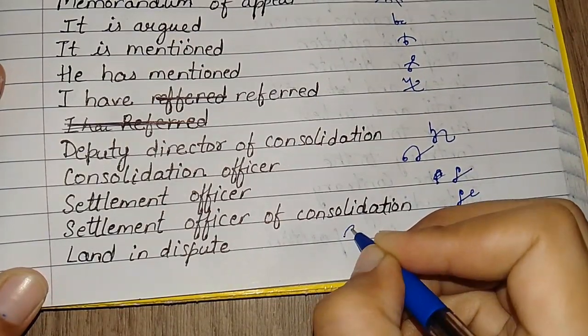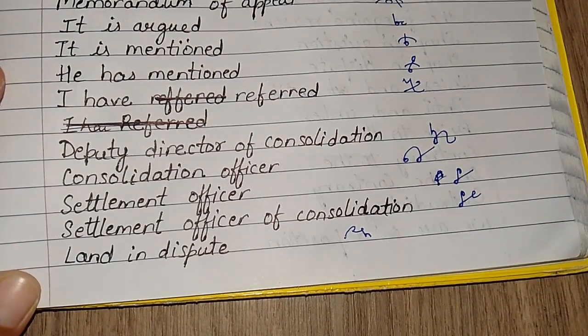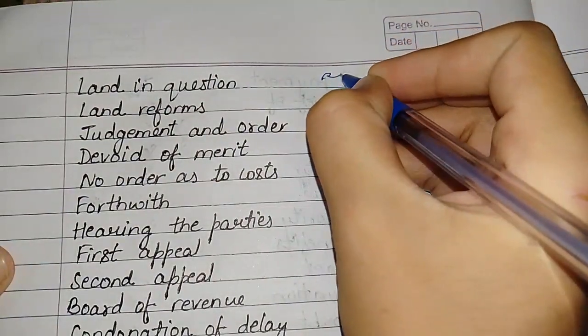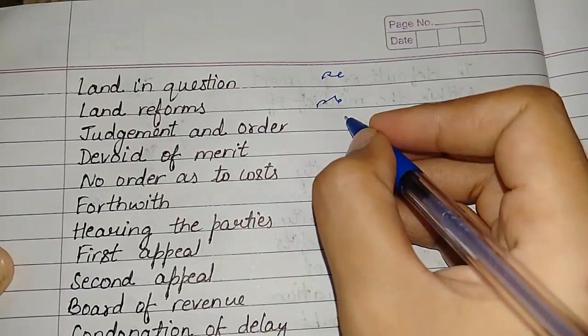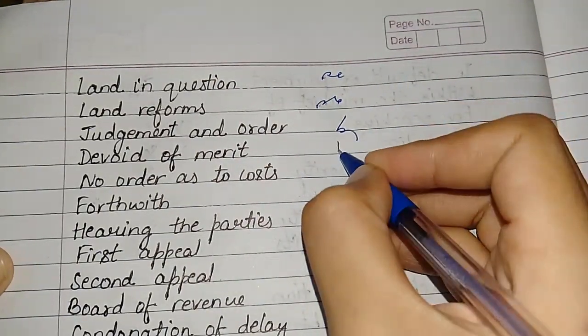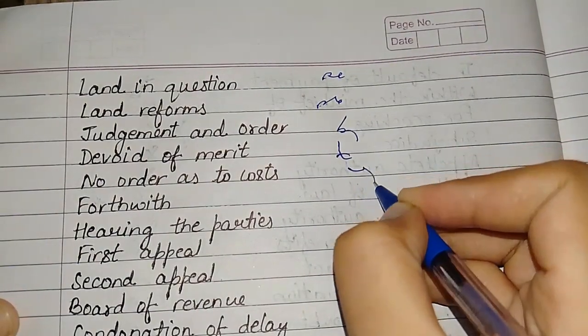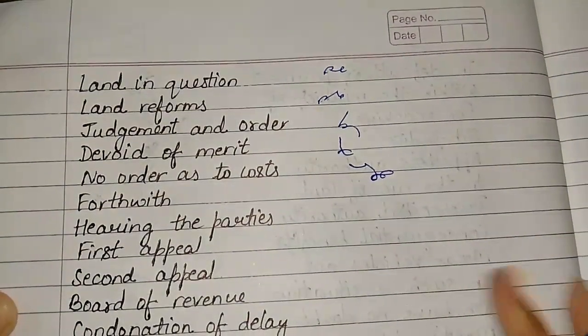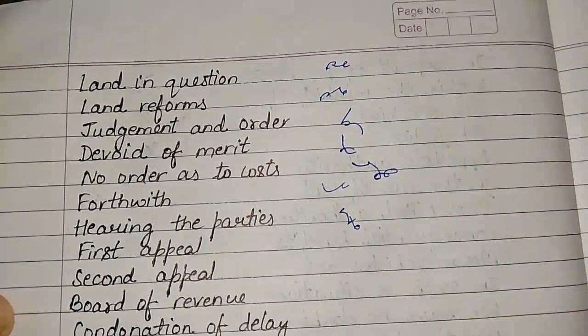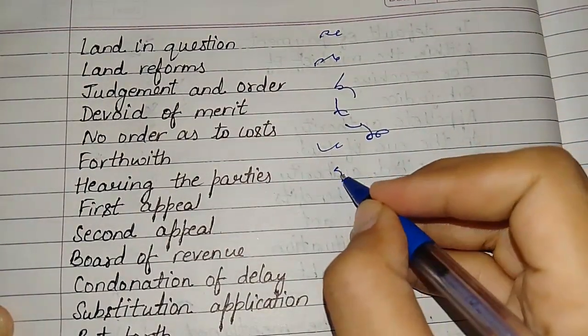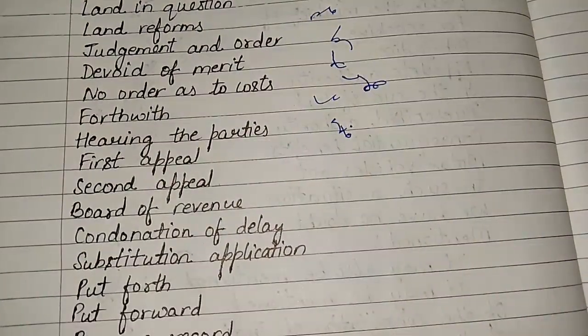Land in dispute, land in question, land reforms, judgment and order, devoid of merit. No order as to costs, forthwith. Hearing the parties. Here you can also put a dot, which we read as ink.